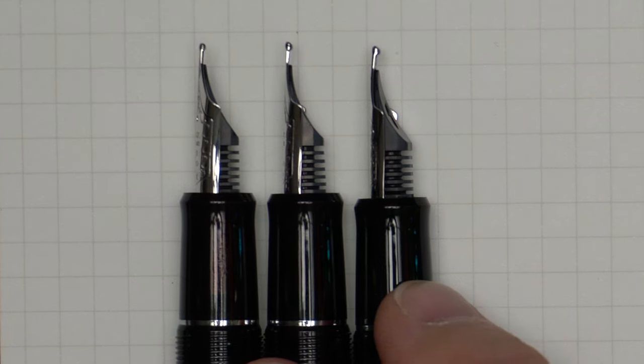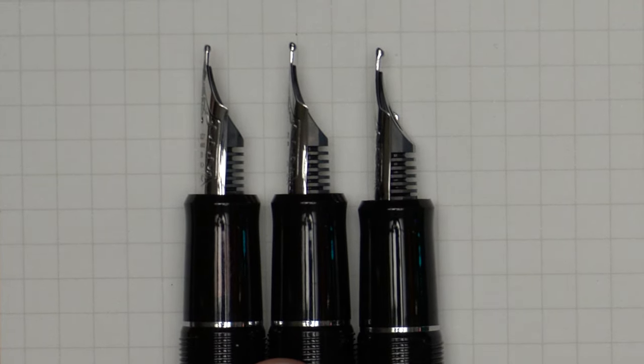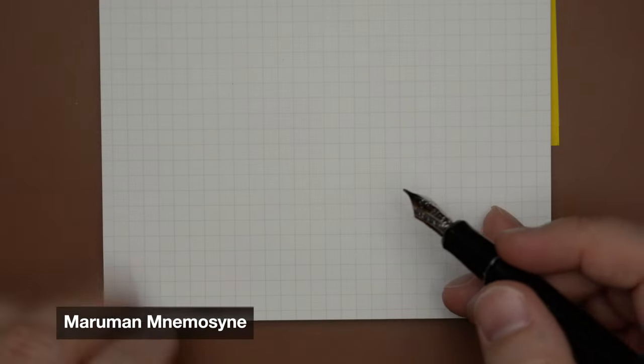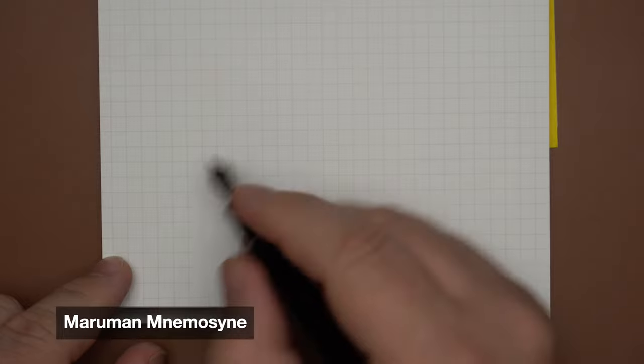Although it does give you the ability to make some smaller strokes if you write with the tip, so we'll take a look at how these three write as we go. This is my Morriman Mnemosyne paper with a 5-millimeter grid, which will give us some idea of how broad these things are.